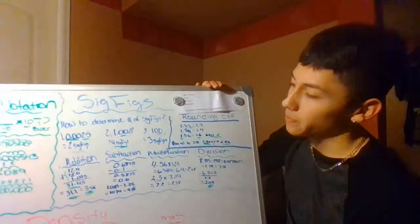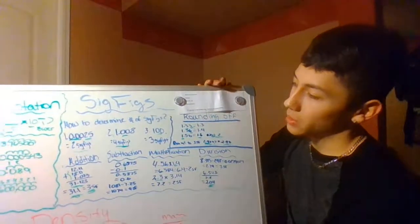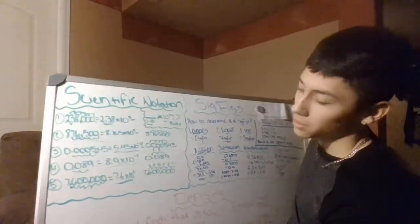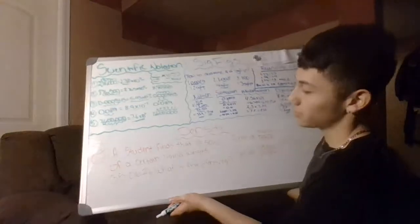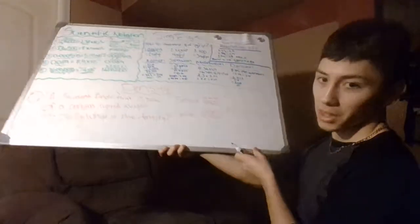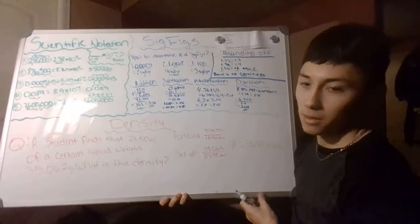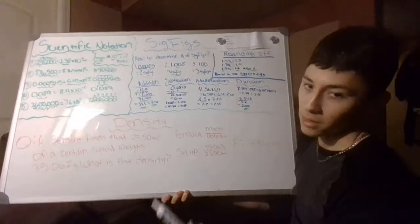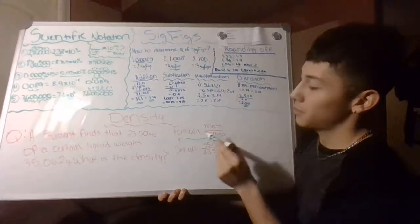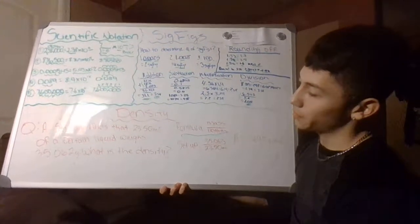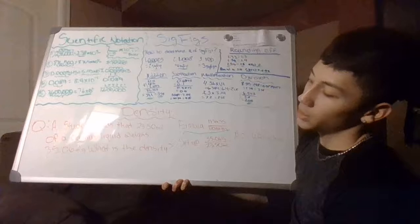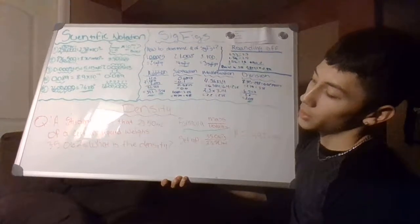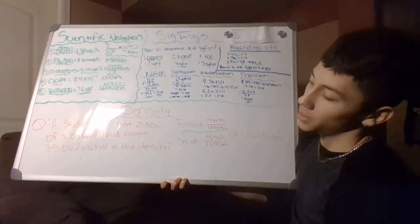Now we have sig figs and scientific notation out of the way. Moving on to density: the formula for density is mass over volume. For example, a student finds that 23.50 milliliters of a certain liquid weighs 35.062 grams — what is the density?